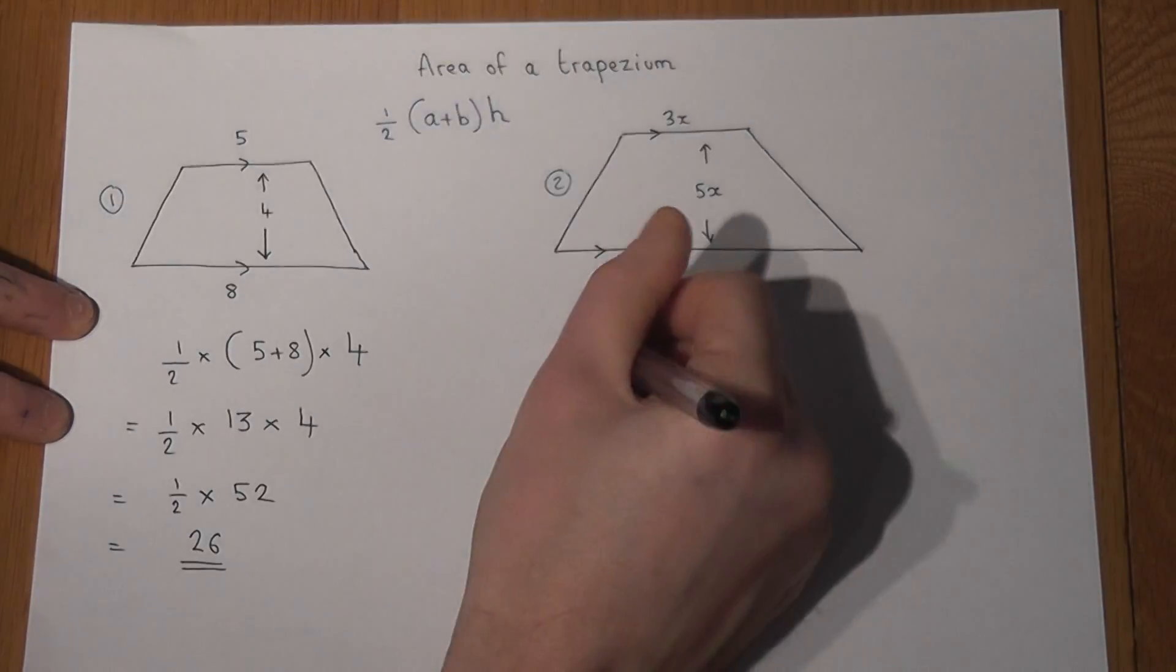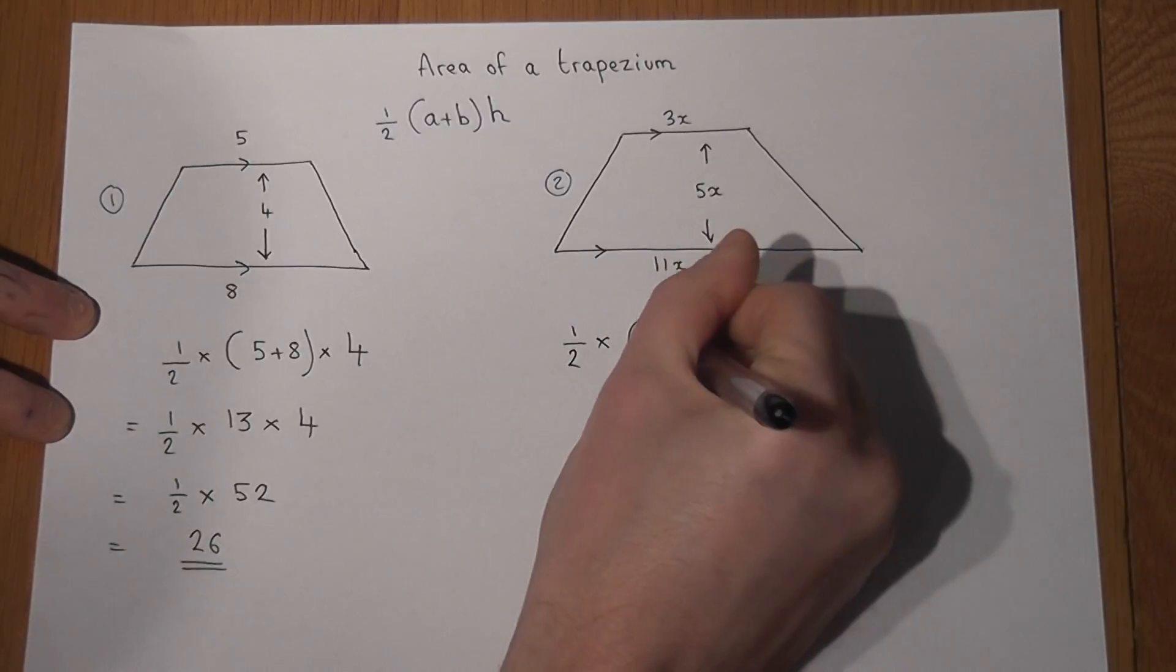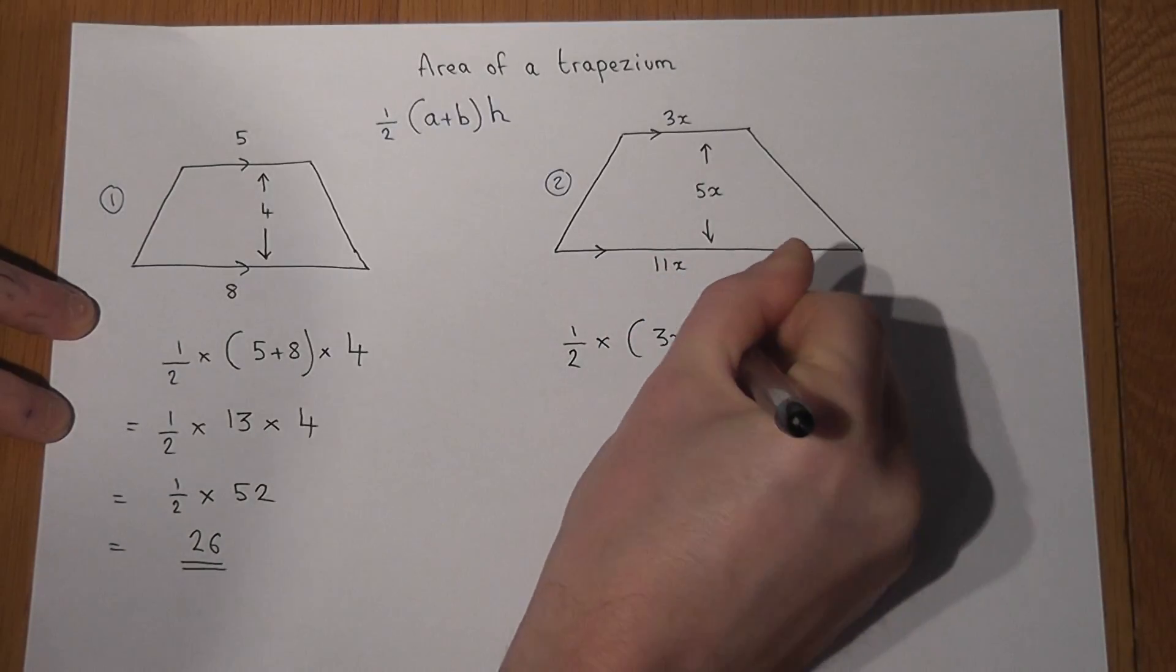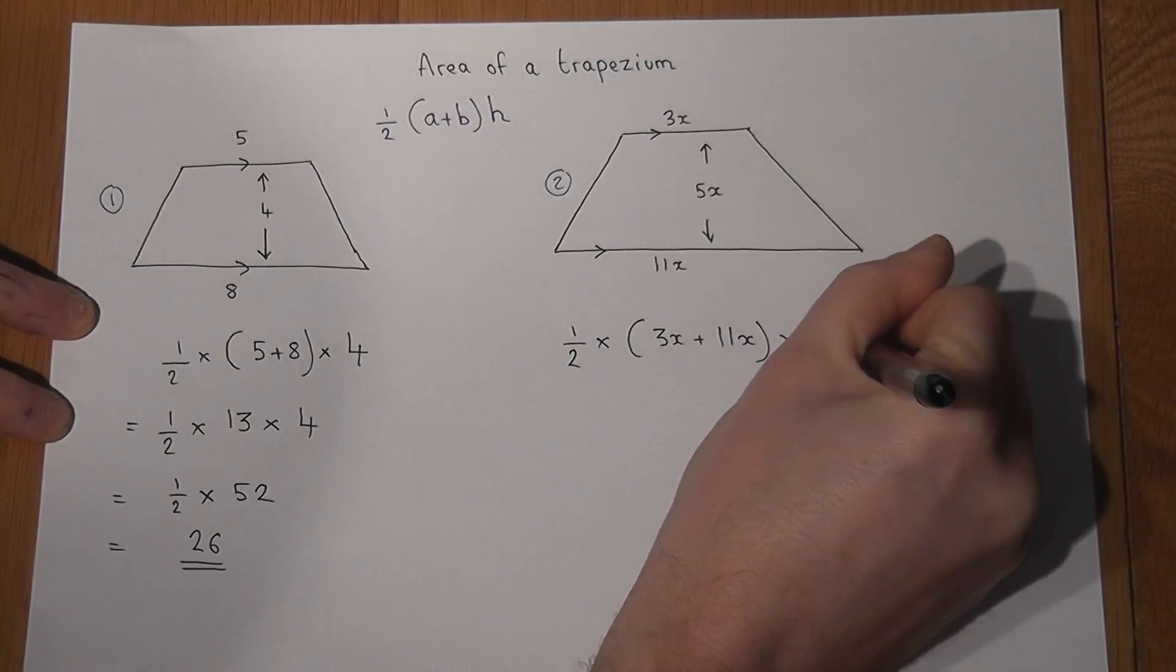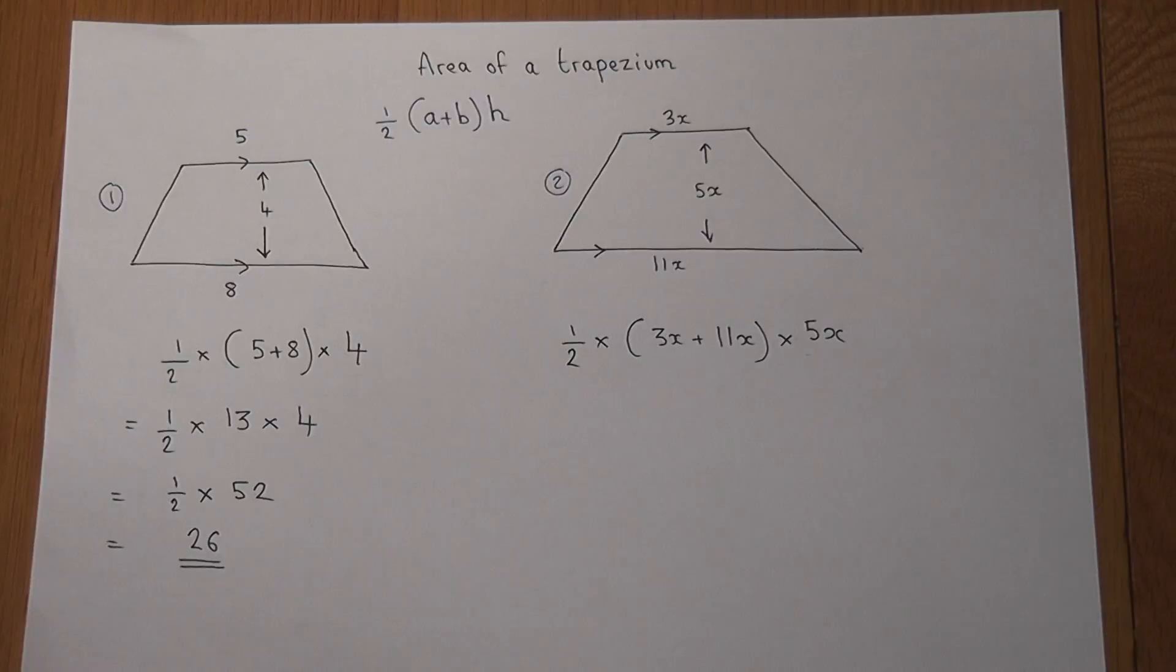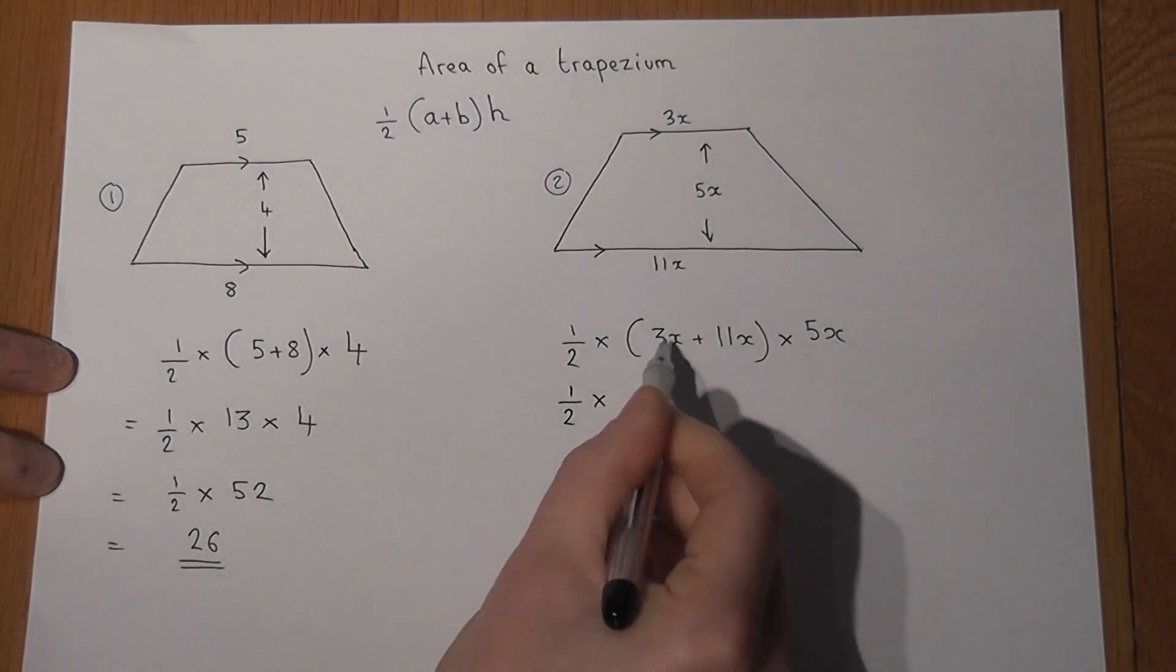One half times by the 3x and the 11x times by the h, which is 5x. I've shown that I know the formula, and the next time to work out bits of this, so 3x plus 11x is just 14x.